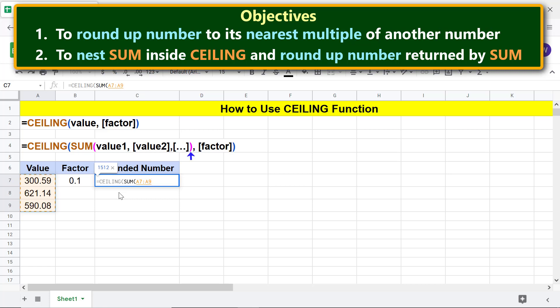Type the closing parenthesis, type comma. For factor, click this cell. Type the closing parenthesis and press enter.